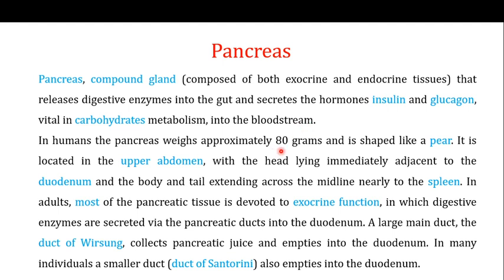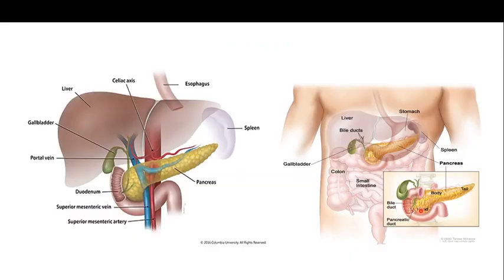In humans, the pancreas weighs approximately 80 grams and is shaped like a pear. It is located in the upper abdomen with the head lying immediately adjacent to the duodenum, and the body and tail extending across the midline nearly to the spleen. So the pancreas has three parts: the tail, the body, and the head.